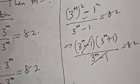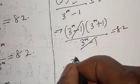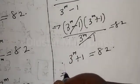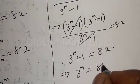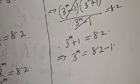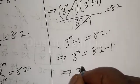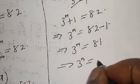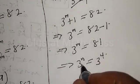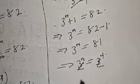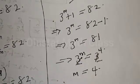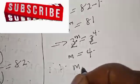We cancel the common factor 3 raised to power m minus 1, leaving 3 raised to power m plus 1 equal to 82. Therefore 3 raised to power m equals 82 minus 1, which is 81. This implies 3 raised to power m equals 81, which can be expressed as 3 raised to power 4. Since the bases are the same, m is equal to 4.